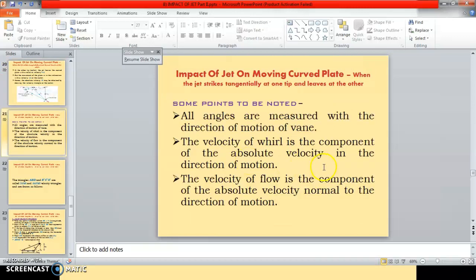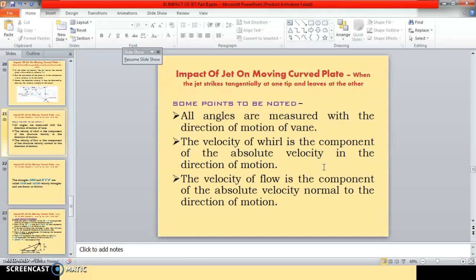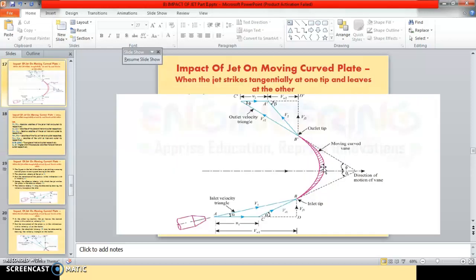First important point: all angles are measured with the direction of motion of the vane. That is, angles alpha, theta, phi, and beta — these four angles are measured with respect to the direction of motion of the vane, which is the direction of motion of the moving plate, that is, the x-direction.